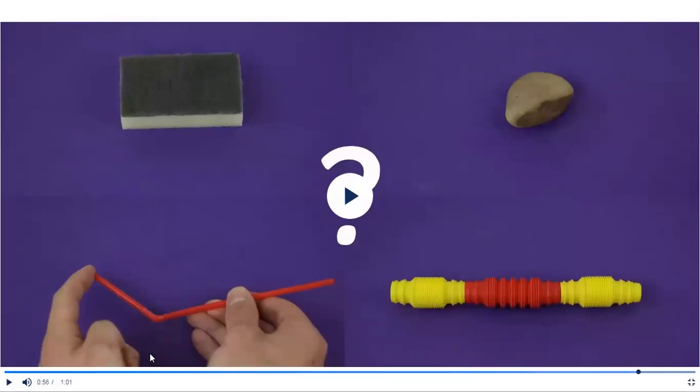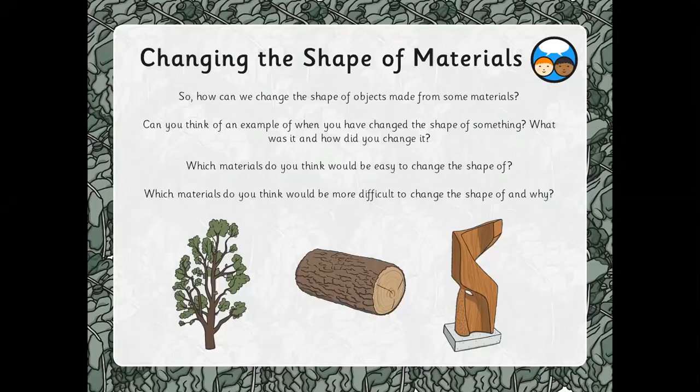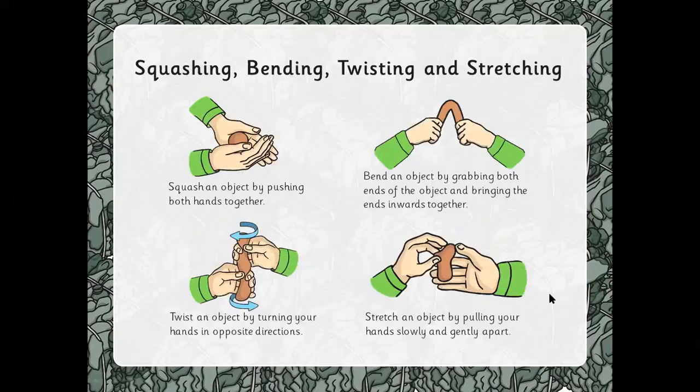Before you carry out your investigation today children, let's remind ourselves of how we might change the shape of an object. We might squash an object by pushing both hands together. We might be able to bend an object by grabbing both ends of the object and bringing the ends inwards together.